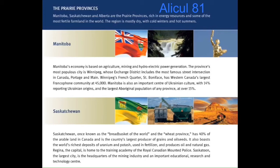Manitoba. Manitoba's economy is based on agriculture, mining and hydroelectric power generation. The province's most populous city is Winnipeg, whose exchange district includes the most famous street intersection in Canada, Portage and Main. Winnipeg's French Quarter, Saint-Boniface, has Western Canada's largest Francophone community at 45,000 people. Manitoba is also an important centre of Ukrainian culture, with 14% reporting Ukrainian origins, and the largest Aboriginal population of any province at over 15%.